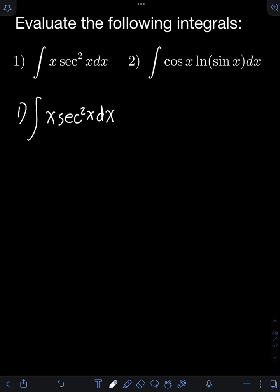This integral can be evaluated using integration by parts, but I won't use the typical formula — the integral of u dv equals uv minus the integral of v du — to solve this problem. Instead, I will use the so-called DI method, or the derivative-integral method.